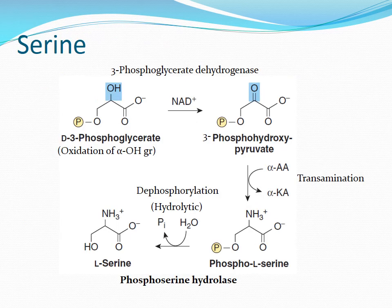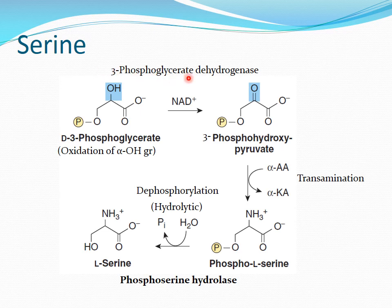In serine biosynthesis, the oxidation of the alpha-hydroxyl group of the glycolytic intermediate 3-phosphoglycerate results in the formation of 3-phosphohydroxypyruvate. This reaction is catalyzed by 3-phosphoglycerate dehydrogenase. Transamination then converts phosphohydroxypyruvate to phosphoserine. Finally, the hydrolytic removal of the phosphoryl group, catalyzed by phosphoserine hydrolase, forms serine.